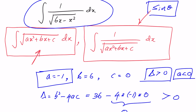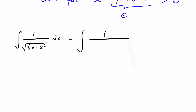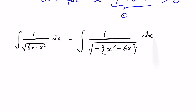Before selecting the substitution we must first complete the square for the quadratic expression inside the square root. The integral is 1 over square root of (6x − x²) dx. To complete the square, we write it as the integral of 1 over the square root of −1 times (x² − 6x), with dx outside.